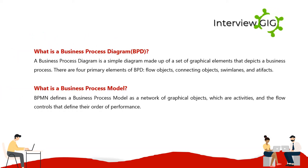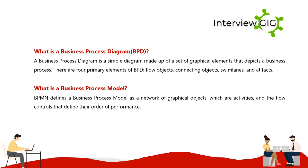What is a business process diagram (BPD)? A business process diagram is a simple diagram made up of a set of graphical elements that depicts a business process. There are four primary elements of a BPD: flow objects, connecting objects, swim lanes, and artifacts. What is a business process model? BPMN defines a business process model as a network of graphical objects, which are activities and the flow controls that define their order of performance.